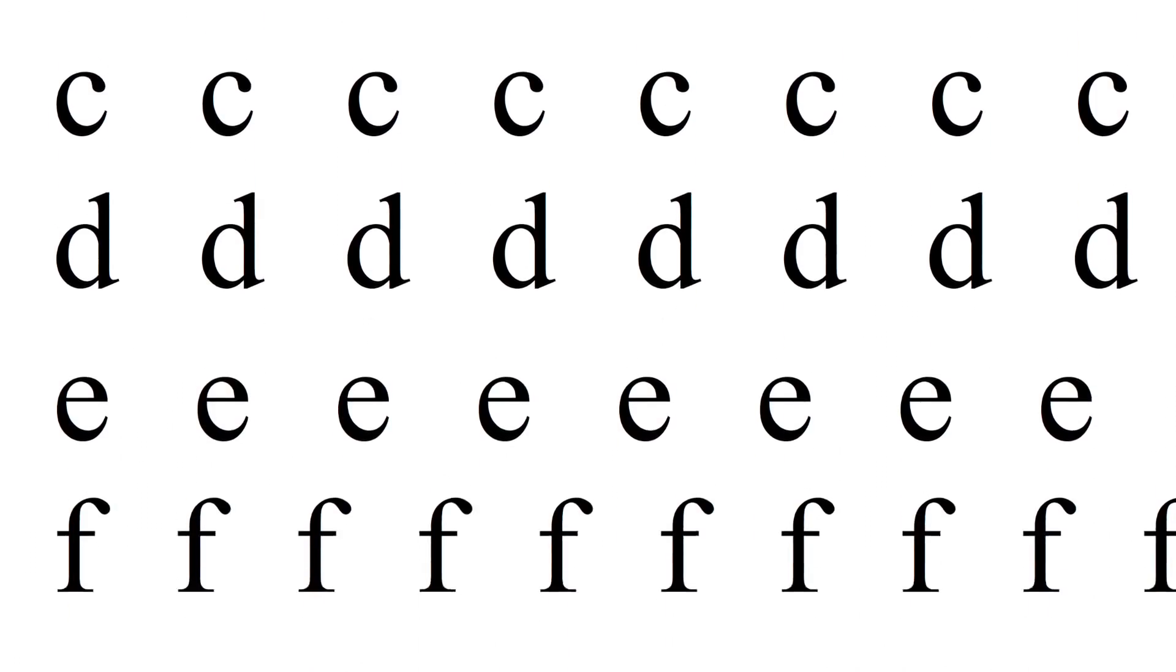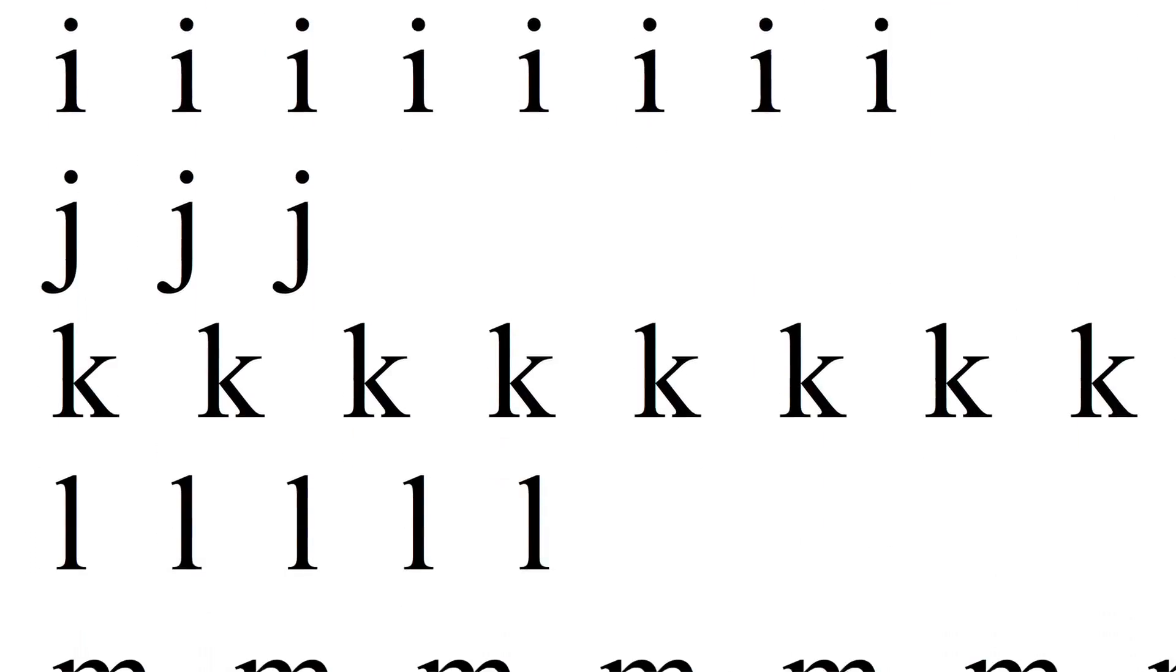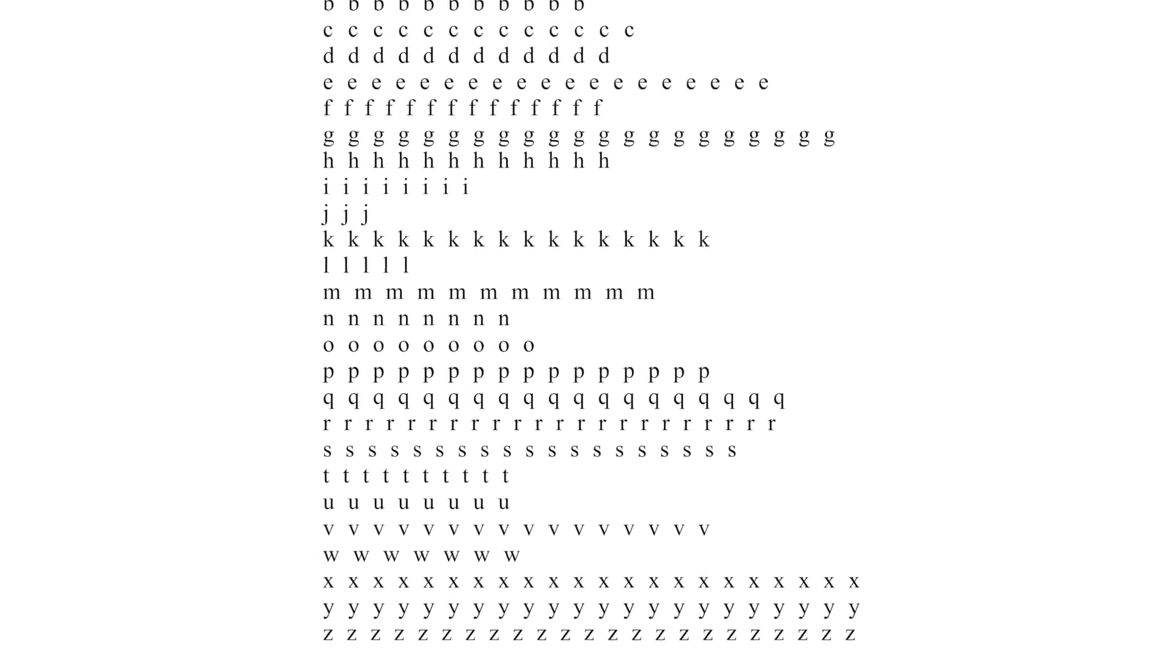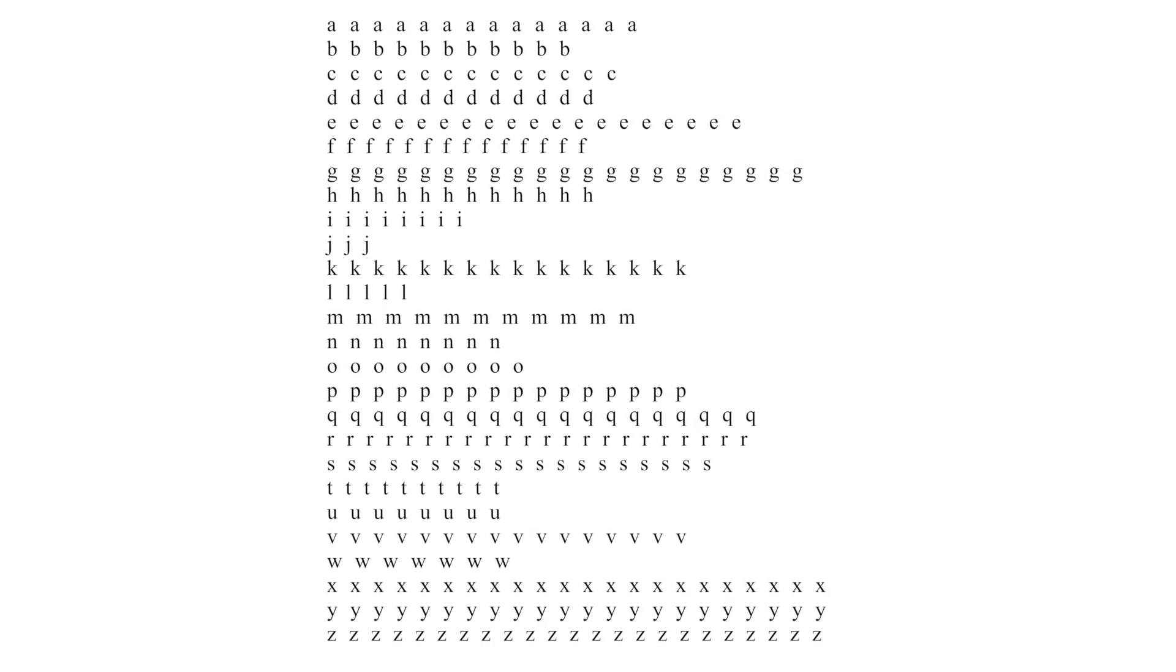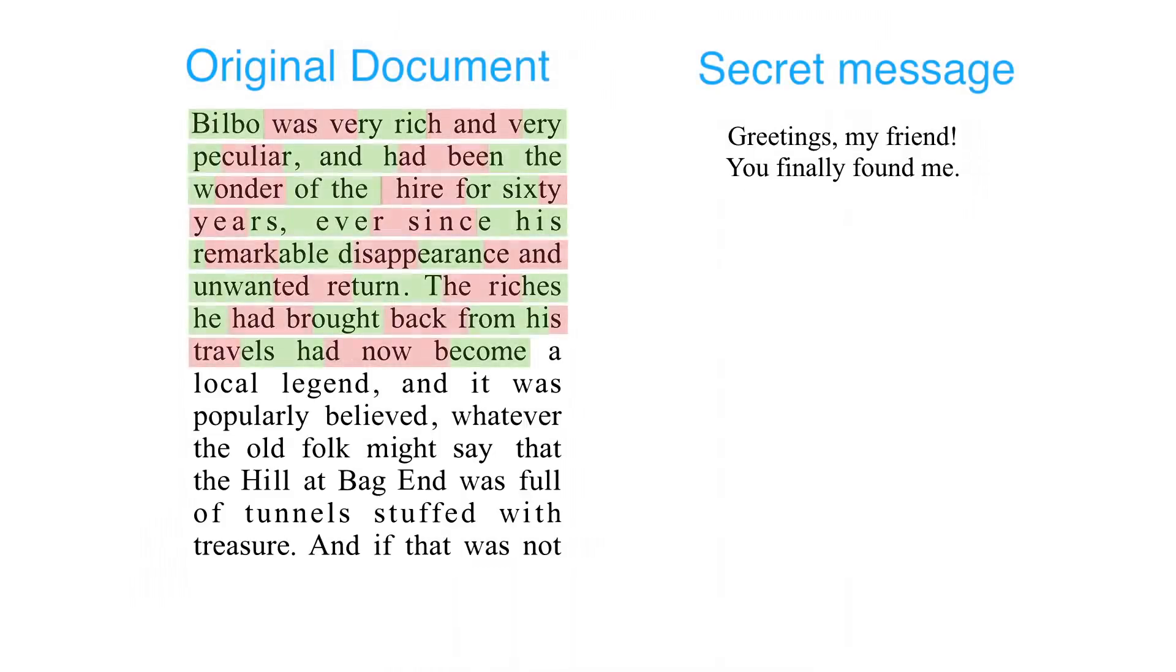A set of manifold locations are selected for glyph perturbations in an unobtrusive yet machine-readable way, forming a code book to encode arbitrary user-specified information. To embed a message in a document, we first divide the letter sequence into several blocks.